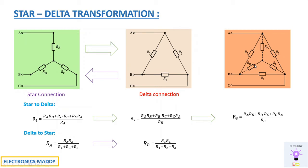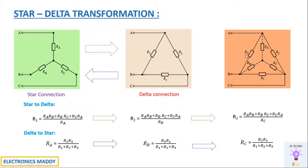For Rb, the adjacent branches are R3 and R1, so Rb = (R3·R1) / (R1 + R2 + R3). For Rc, the adjacent branches are R2 and R1, so Rc = (R2·R1) / (R1 + R2 + R3). Key memory tip: in star-to-delta the denominator uses the opposite branch; in delta-to-star the numerator uses the adjacent branches, while the denominator stays the same.